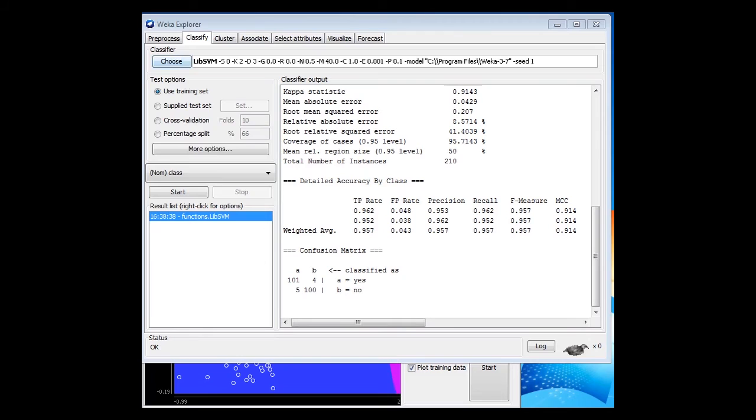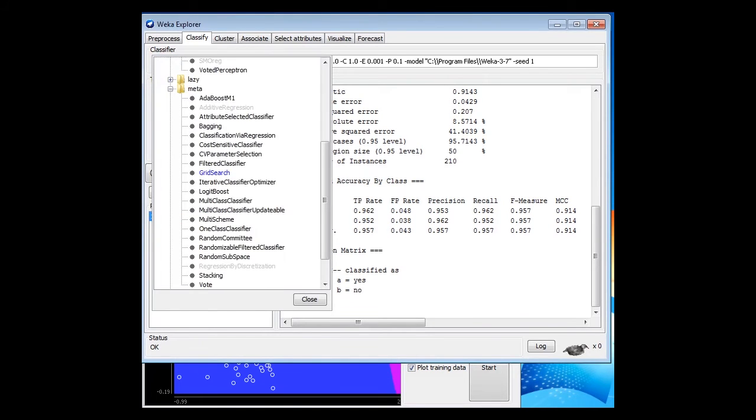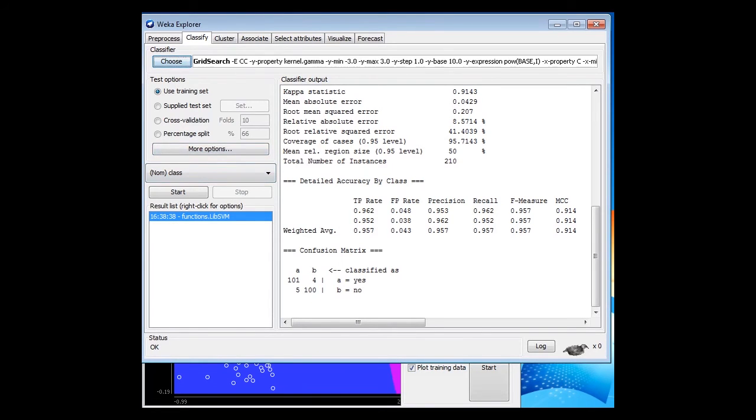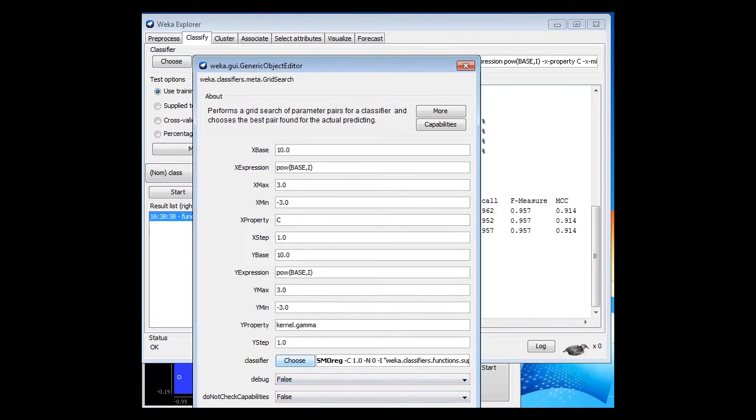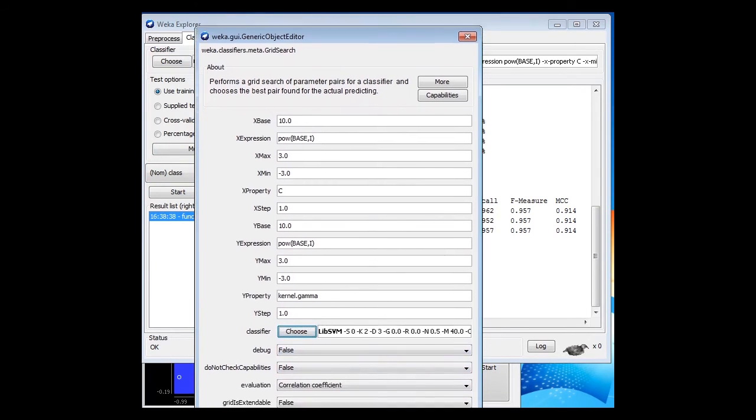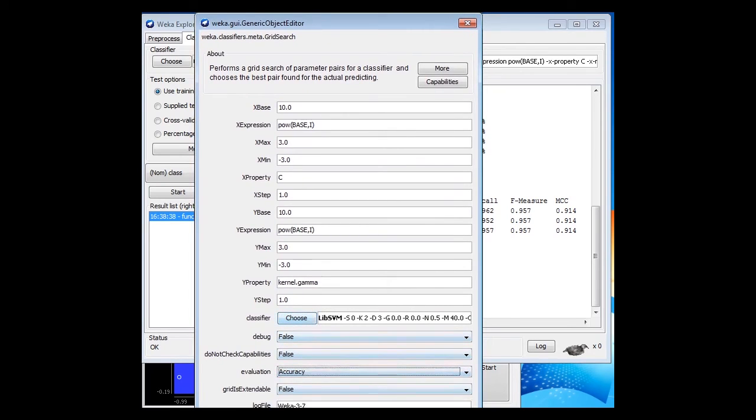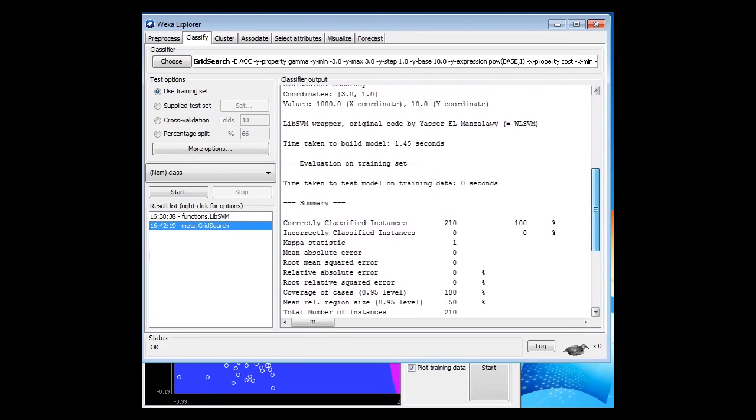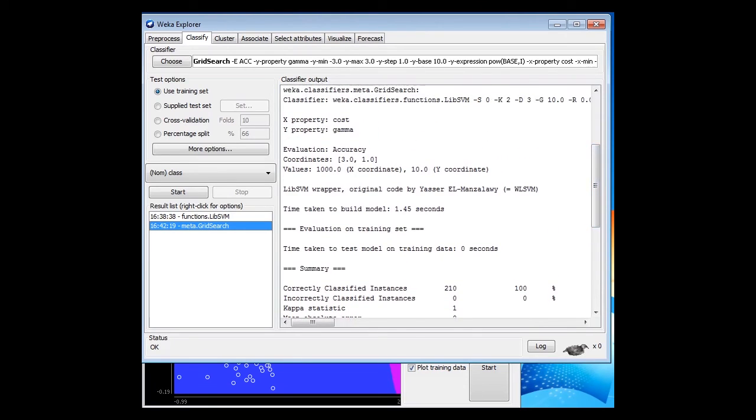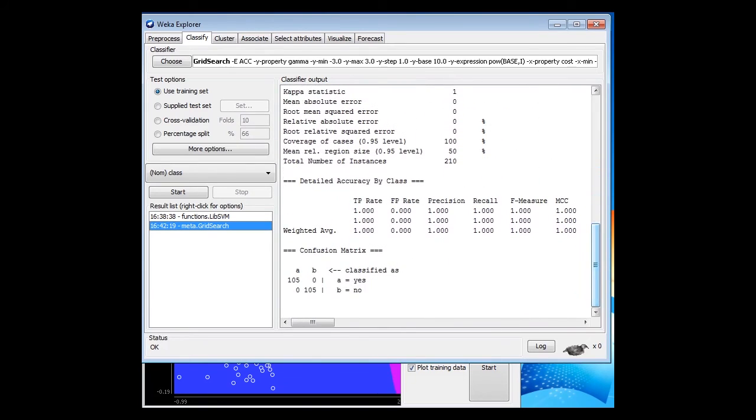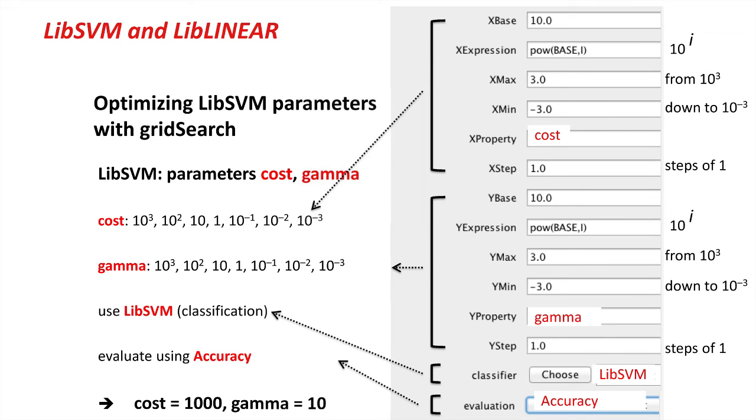Let me set that up in Weka. I'm going to choose grid search from the meta category. In grid search, I'm going to first of all choose the classifier. I'm going to choose lib-svm. I'm going to optimize the accuracy. Then the two properties involved are cost and gamma. If I run that, it's finished here. The parameters are 1000 for the x-coordinate, that's cost, and 10 for the y-coordinate, that's gamma. We've got 100% accuracy with that data set. We could see we were going to get 100% accuracy when we looked at the boundary visualization. That's for lib-svm.